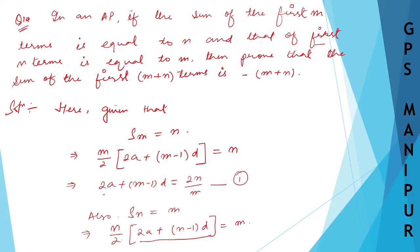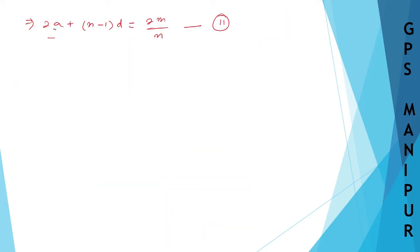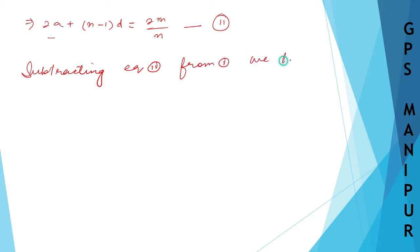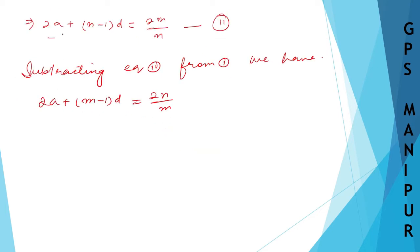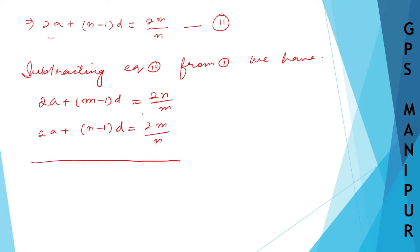Since 2a appears in both equations, I can subtract one from the other to eliminate it. Subtracting Equation 2 from Equation 1: [2a + (m−1)d = 2n/m] minus [2a + (n−1)d = 2m/n].